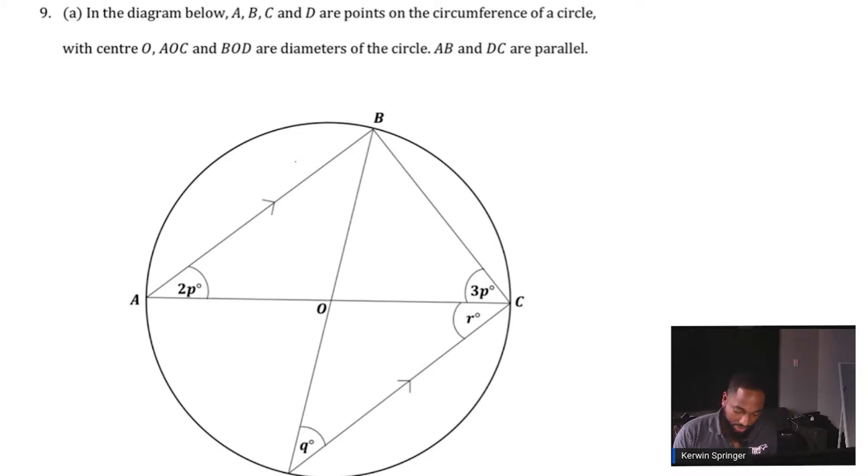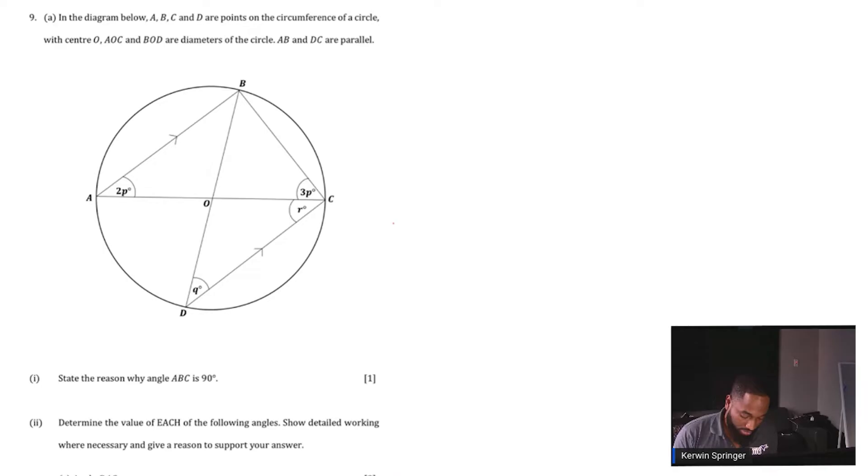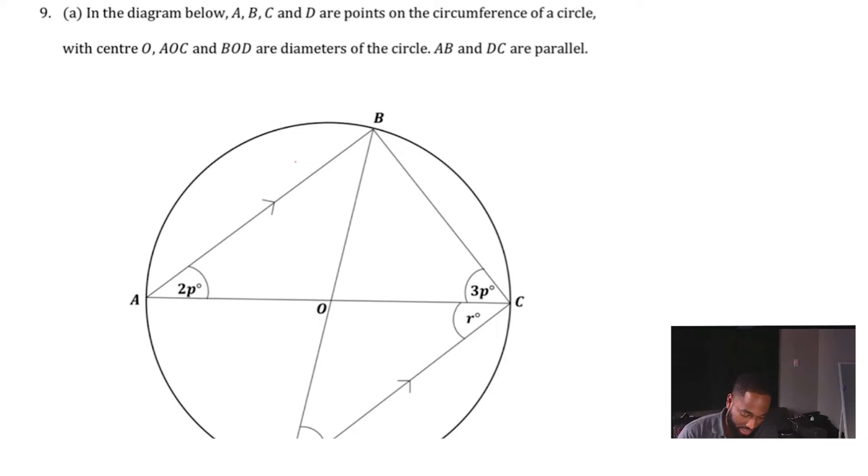These are diameters, right? So they split the circle into semicircles. So those are diameters. AB and DC are parallel, so we have to determine some values. That's where the question asks us to state the reason why angle ABC is 90 degrees.